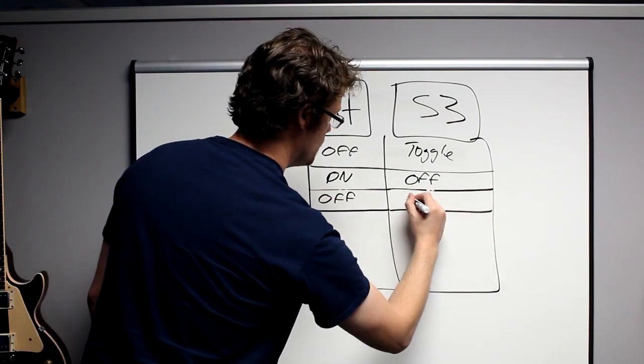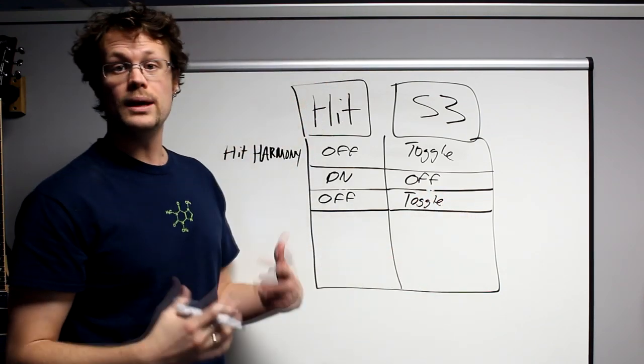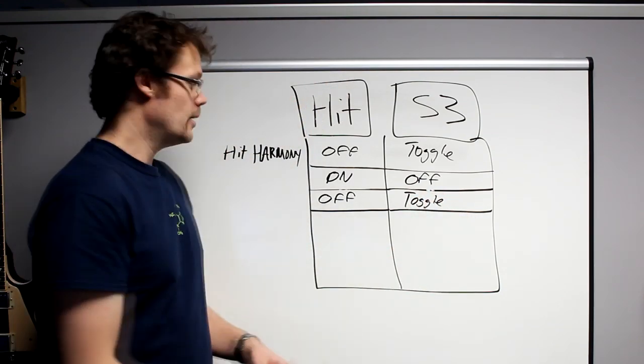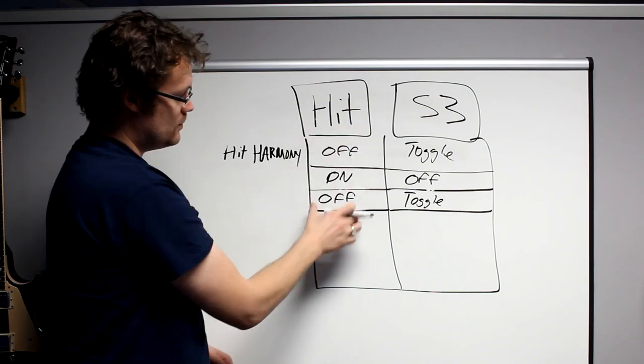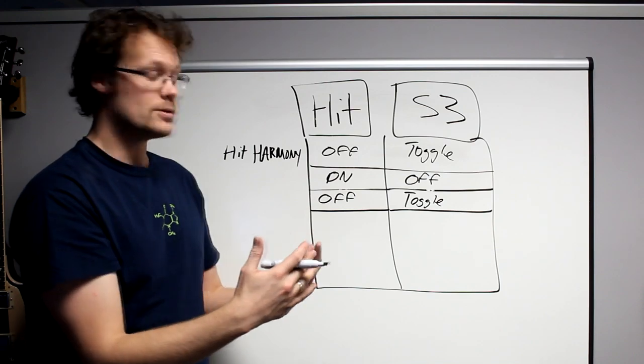And go back to here. Switch 3 once again becomes a toggle. On, off, on, off. Because you've taken advantage of the Hit turning things off and on, and the Switch 3 toggling them outside of that.